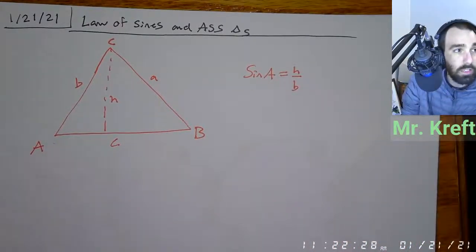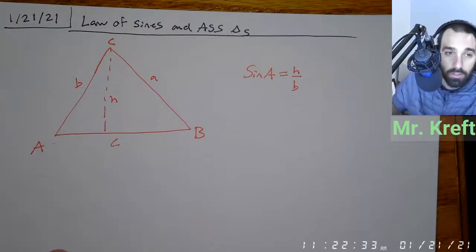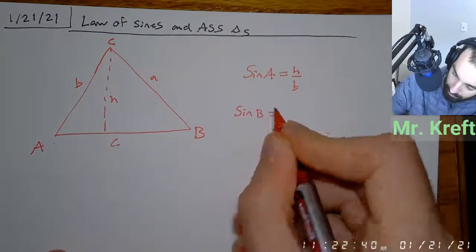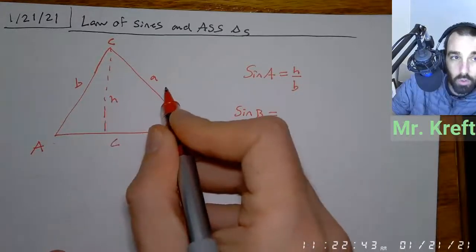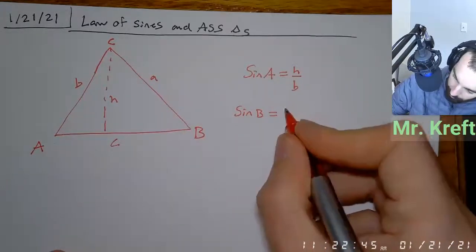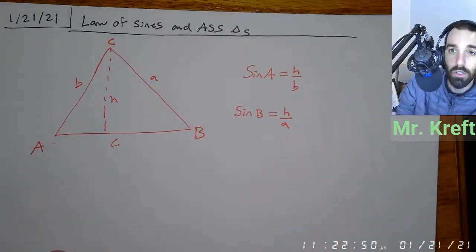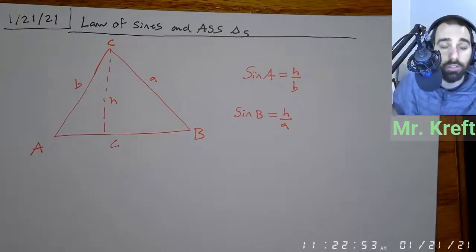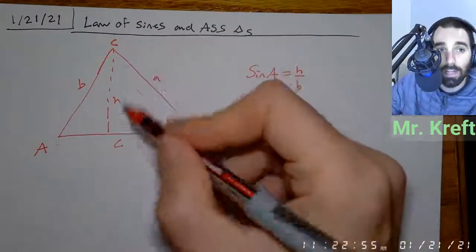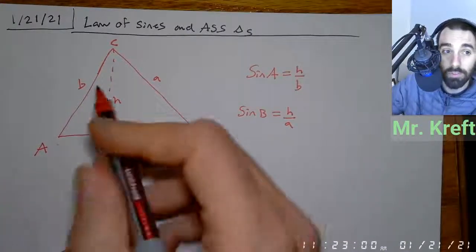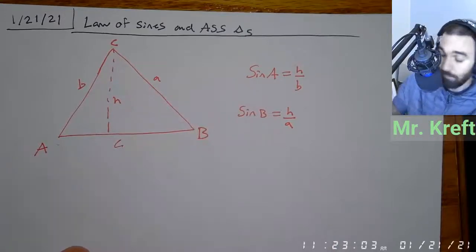We can do the exact same thing with angle B. Sine of angle B would be opposite over hypotenuse. What we're going to find out today in law of sines is actually all about the height of the triangle — that's the key takeaway. The height of the triangle is what's most important.